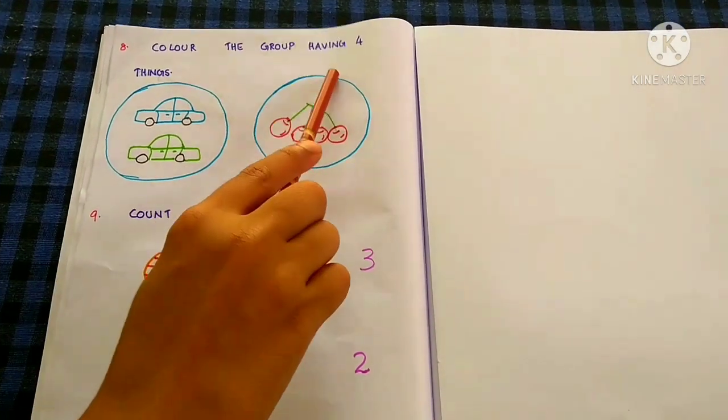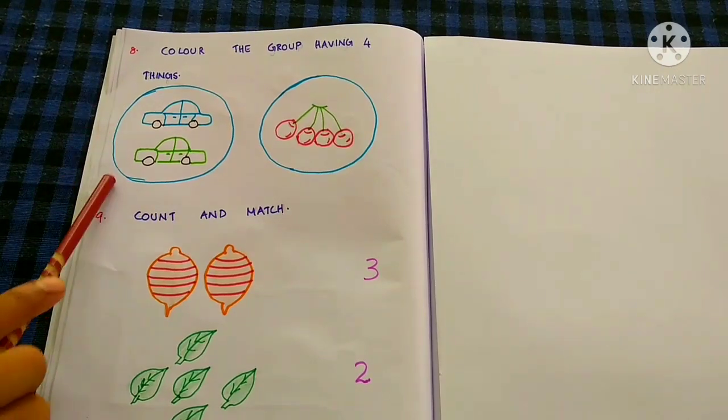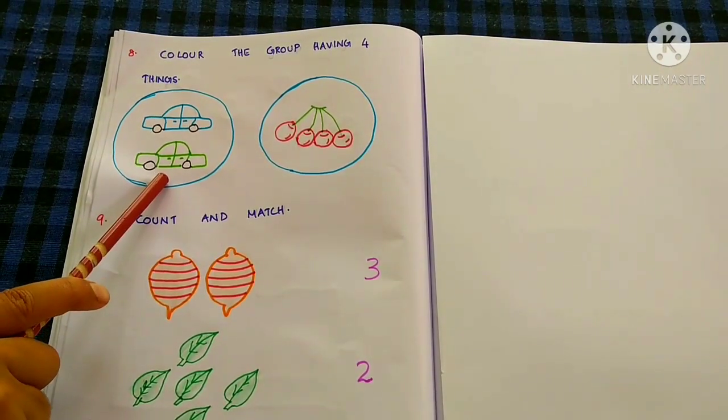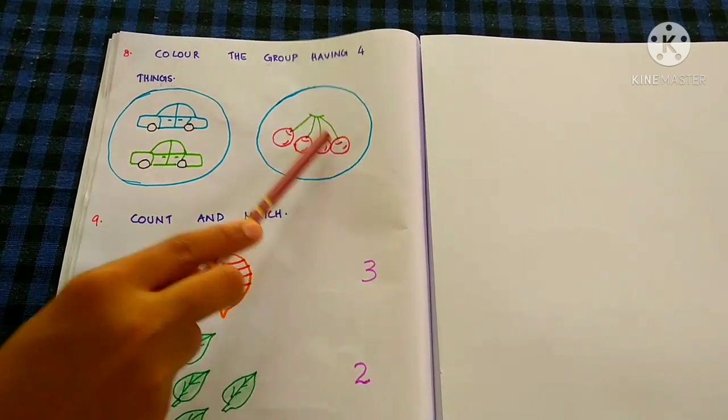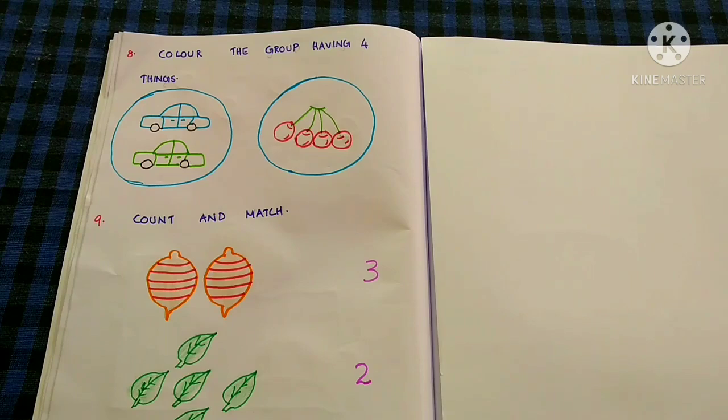Color the group having 4 things. This group has 1, 2 cars. This group has 1, 2, 3, 4 cherries. So we have to color it.